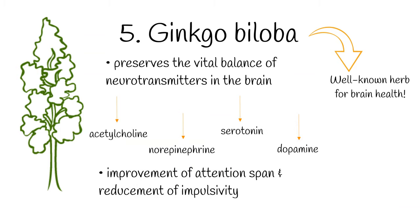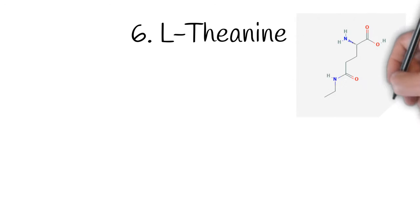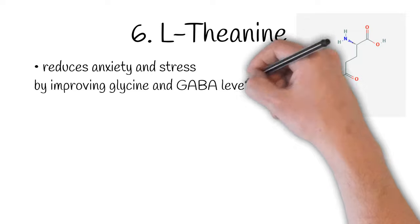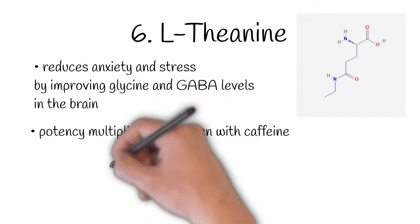L-theanine is a nootropic on our list. This is an amino acid that helps reduce anxiety and stress by improving glycine and GABA levels in the brain. The potency of L-theanine multiplies when taken with caffeine. That's why we recommend combining both.